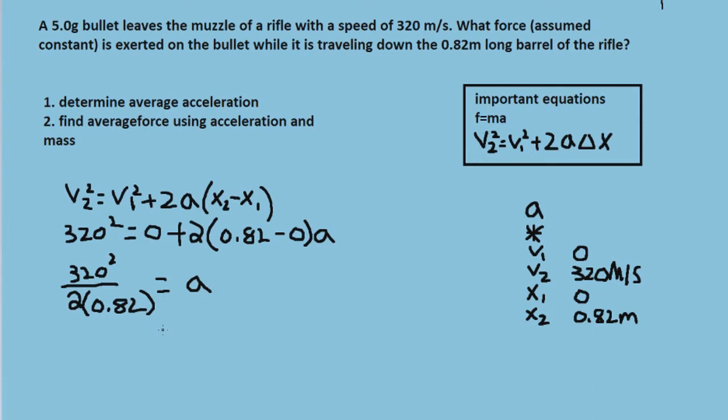So we're going to get an answer of 6.24 times 10 to the 4 meters per second squared.